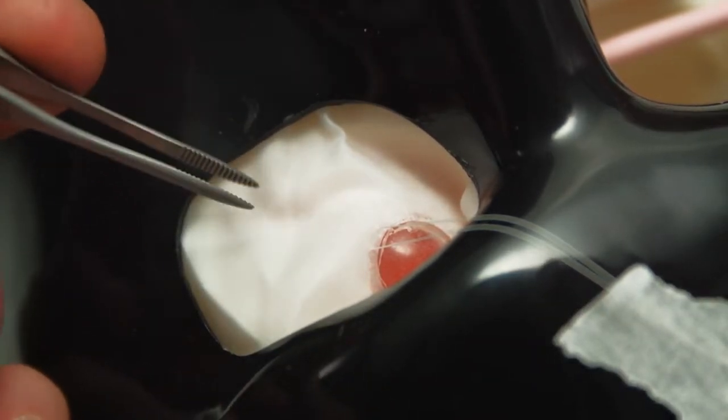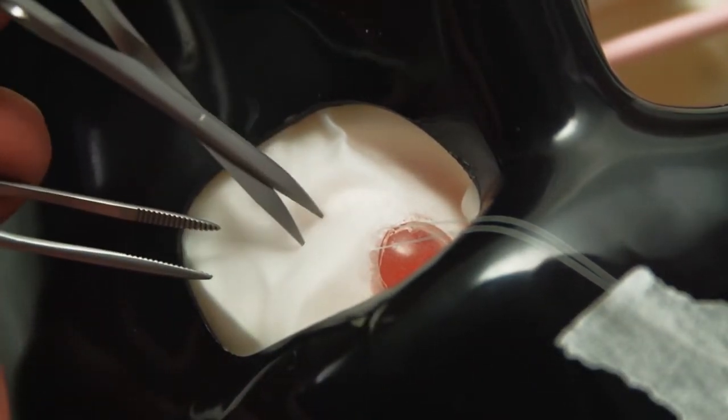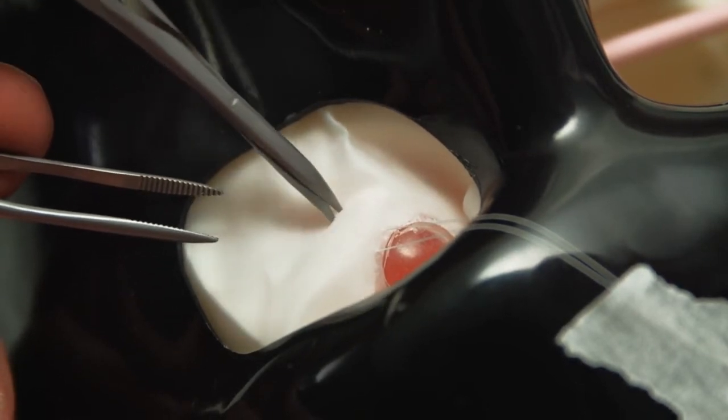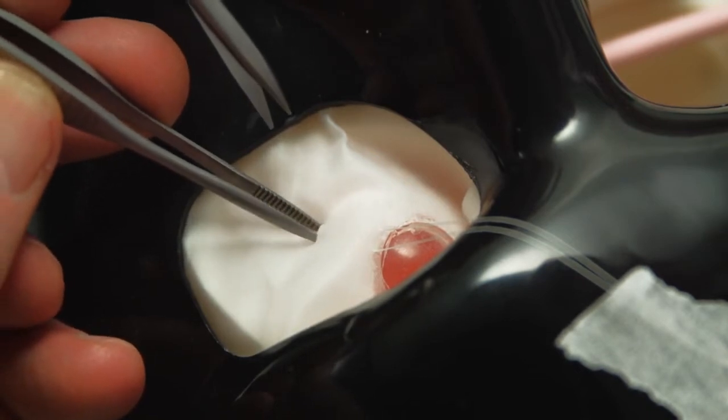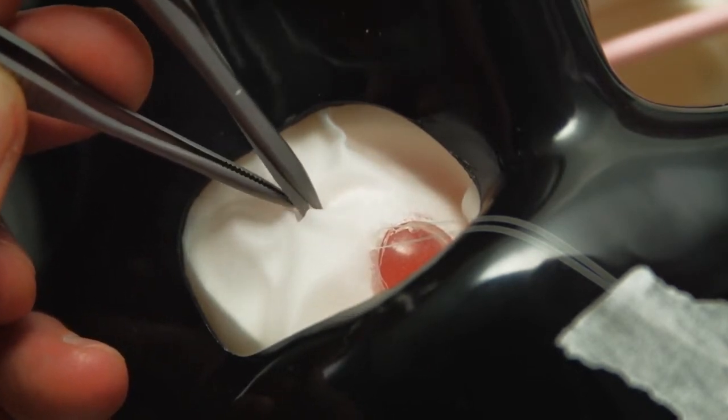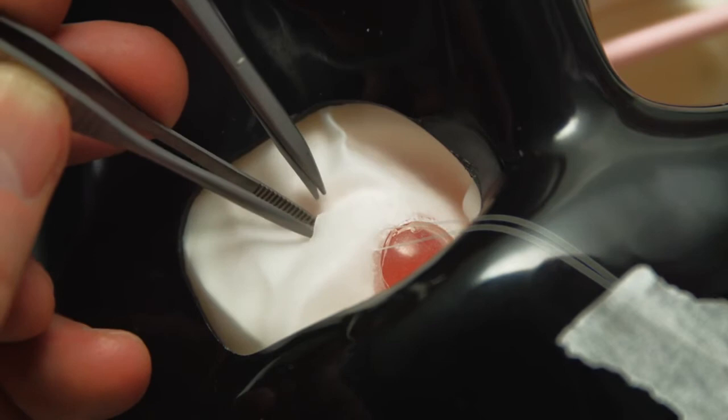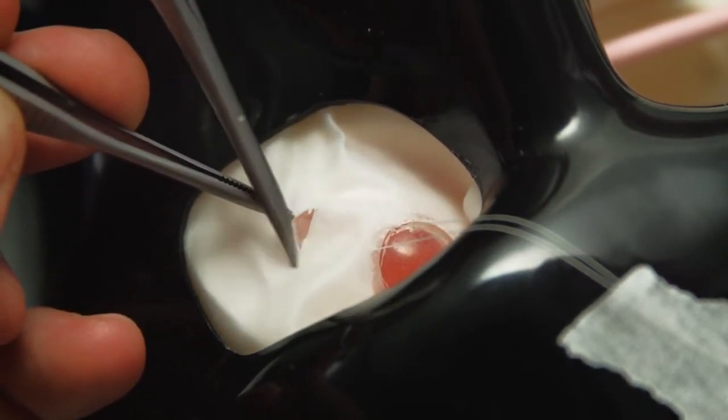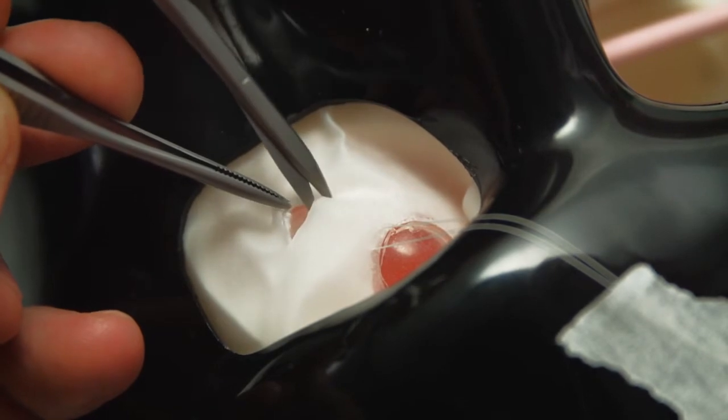Here we can see the inferior bleak tendon emerging on the contralateral eye. So irrespective of what technique you normally perform for inferior bleak weakening procedures, it can be realistically simulated using these eyes.